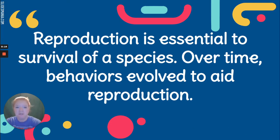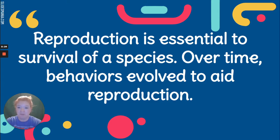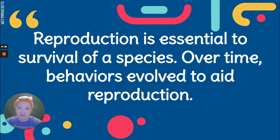What you need to understand is that reproduction is essential to the survival of a species, not to the survival of an individual. Obviously an individual can survive if they don't reproduce, but a species cannot survive if there is no reproduction. So over time, behaviors have evolved to aid reproduction because reproduction is vital to a species' survival.